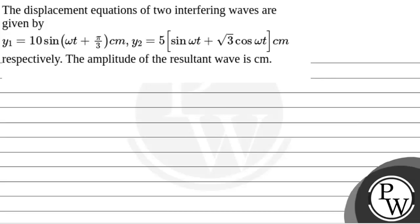Let us see the question. The displacement equations of two interfering waves are given: y1 is equal to 10 sin(ωt + π/3) cm, and y2 is equal to 5 sin(ωt) + √3 cos(ωt) cm. We need to find the amplitude of the resultant wave in cm.